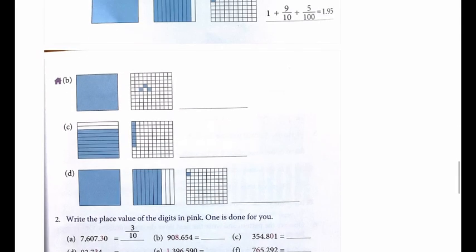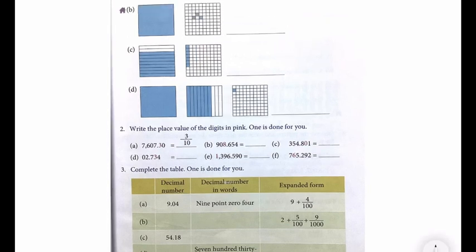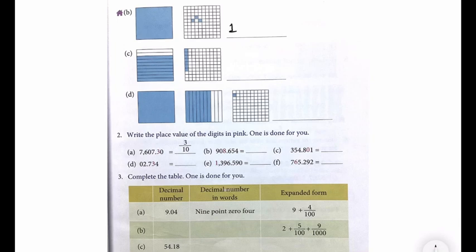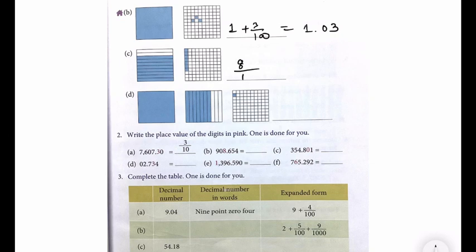Next: one part is colored plus three out of hundred parts colored, so you write 1.03 — because there is no tenth part here. Then eight out of ten parts are colored and seven out of hundred parts are colored: no ones place, so after decimal write 8 in tenths place and 7 in hundredths place. The next one is your homework.